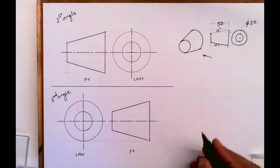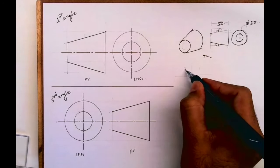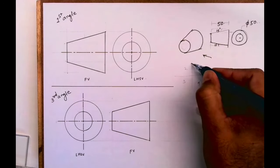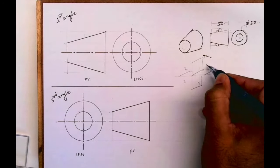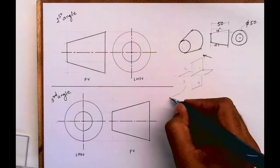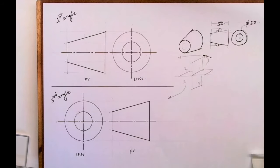See this. Now this is first angle, second angle, third angle, fourth angle quadrant, right? First, second, third, fourth quadrant. So this is for first quadrant and this is for third quadrant. So I hope all of you have understood this. Thank you.